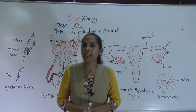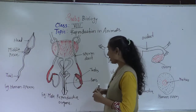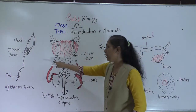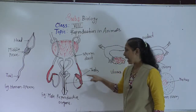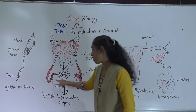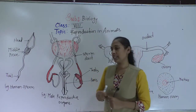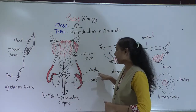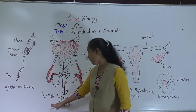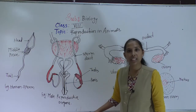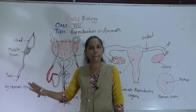The male reproductive organ mainly consists of three main parts: two sperm ducts, the penis, and a pair of testes. Singularly, we refer to them as testes. These are the three main parts of the male reproductive system.